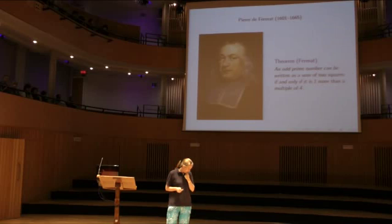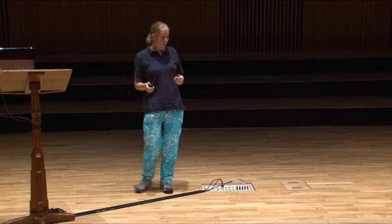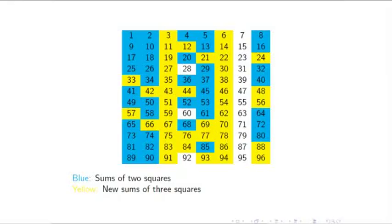We can classify which numbers are sums of two squares and which aren't — that's quite nice. But as mathematicians we don't pack our bags and go home. We say: let's generalize. What happens if we have three squares? The blue numbers are sums of two squares; the yellow numbers are extra things I can make if I allow three squares. Zero is a square, so anything that's a sum of two squares is automatically a sum of three squares. But all of a sudden we've got a whole load of bonus numbers we can write as sums of three squares.